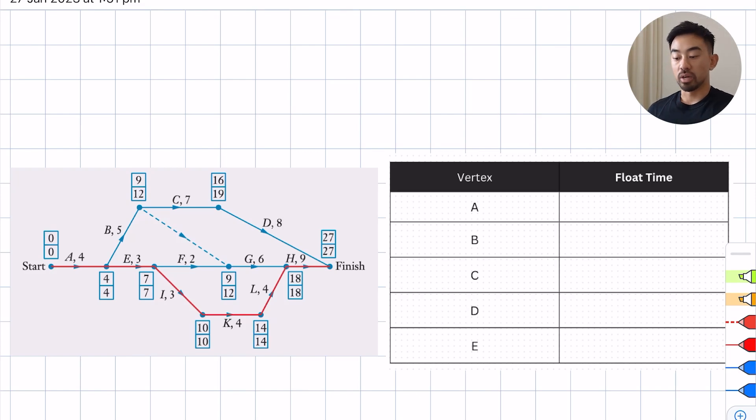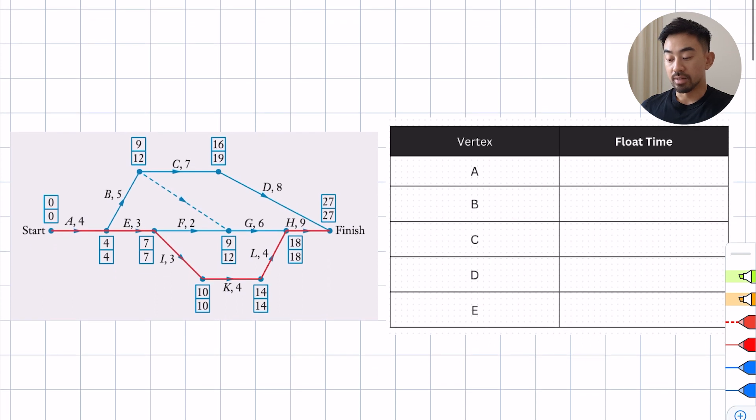Hey guys, welcome back. Today we're going to be looking at how to find float times, which is part of the networks chapter. The idea basically is you want to see if a certain activity has any leeway in terms of when the activity needs to be completed, and that is basically a reference to what the float time is.